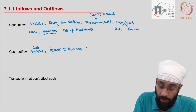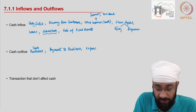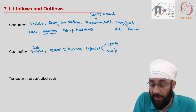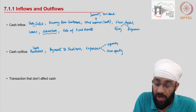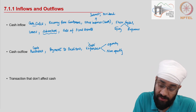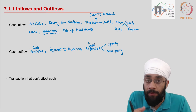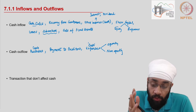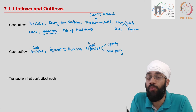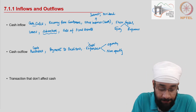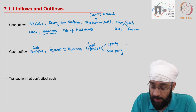You can have all the rest of expenses — operating, non-operating, direct and indirect. All expenses paid in cash. We're not talking about accrued expenses, meaning expenses that have become due but haven't been paid. We are only talking about expenses for which you pay in cash. So these are the outflows.